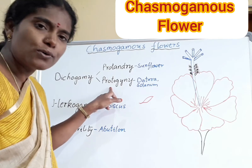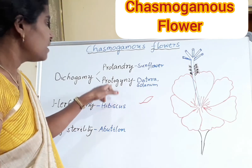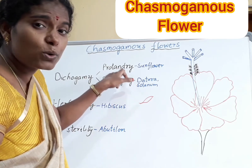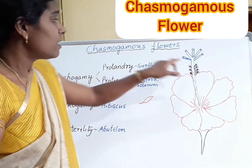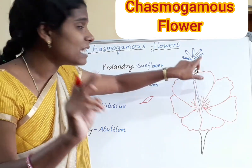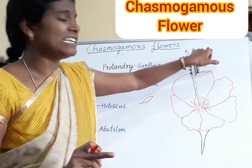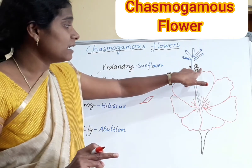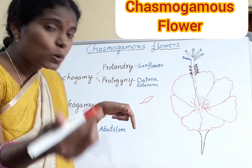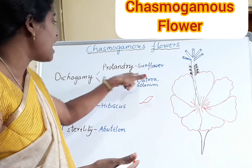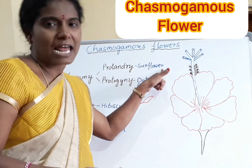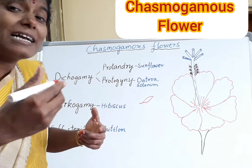In Protandry — 'andry' refers to androecium — the pollen grains mature first before the stigma. So when pollen grains mature earlier than the stigma, that is called Protandry. Example: Sunflower.